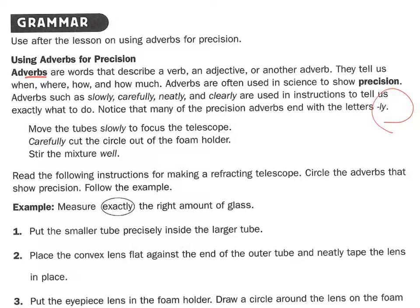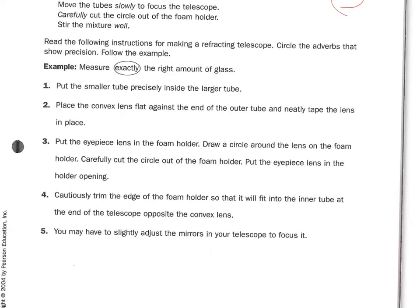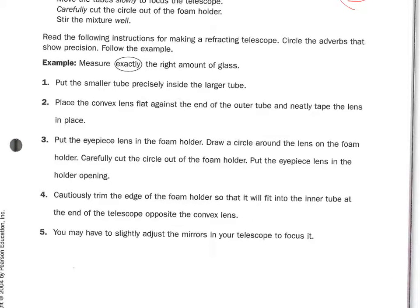Here's the example: 'Move the tubes slowly to focus the telescope.' 'Carefully cut the circle out of the foam roller.' 'Stir the mixture well.' Here, 'well' is an adverb but it doesn't have an L-Y because we don't say 'welly' — we just say 'well.' Read the following instructions for making a refracting telescope. Circle the adverbs that show precision — follow the example: 'Measure exactly the right amount of glass.' Number one: put the smaller tube precisely inside the larger tube. That's right — precisely. Please continue.